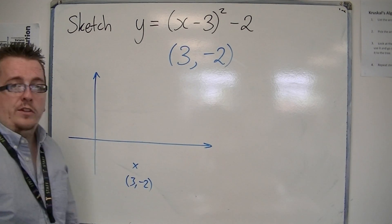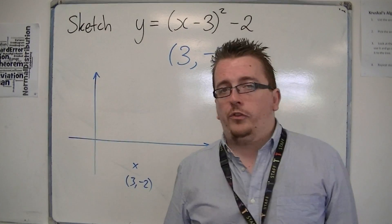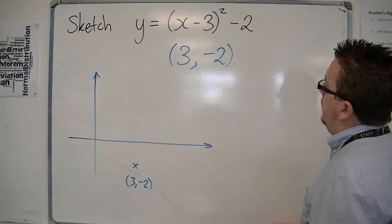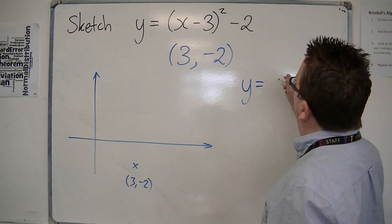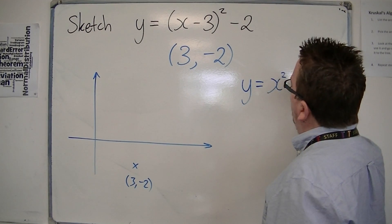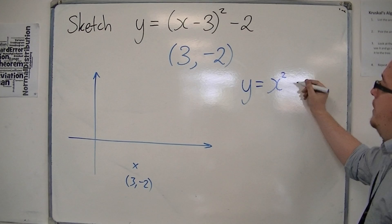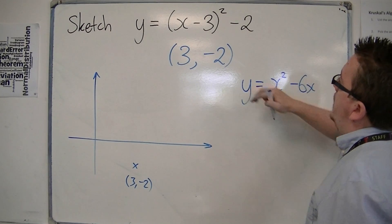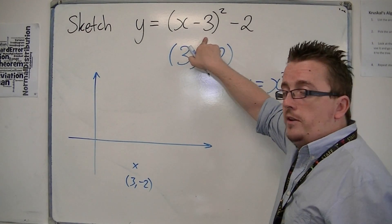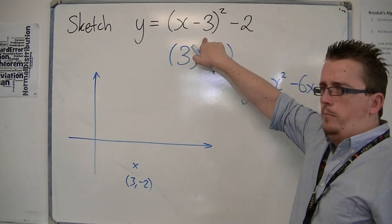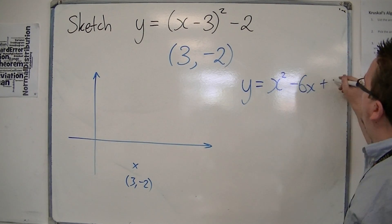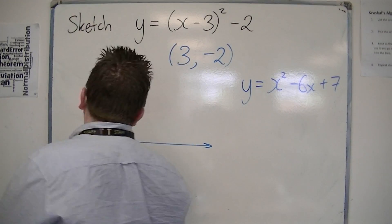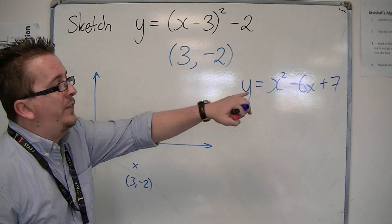The next thing to do is to figure out where it crosses the y-axis. So you need to multiply out the brackets, so we're going to get x squared, we're going to get minus 3x, take away 3x, that's minus 6x, then we're going to get minus 3 times minus 3 is plus positive 9, take away 2 is plus 7. So you know, therefore, that it crosses the y-axis at plus 7.